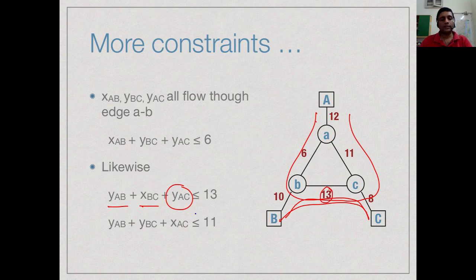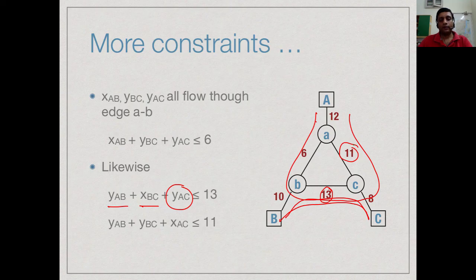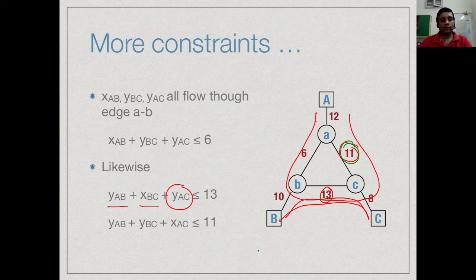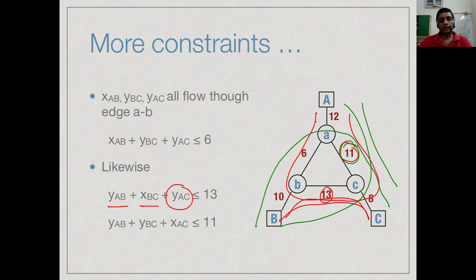These 3 things cannot exceed 8 and the third same thing holds for 11. For 11, we have that it lies on the direct connection from A to C and on these 2 indirect connections, A to B indirect connection and B to C indirect connection.